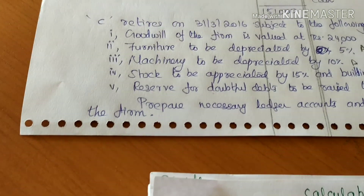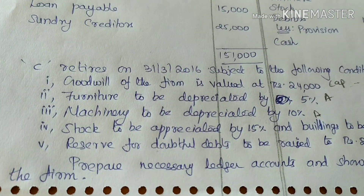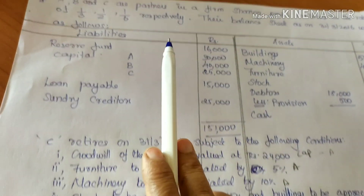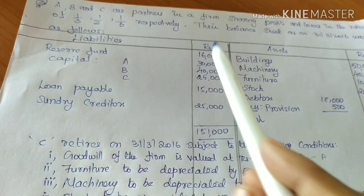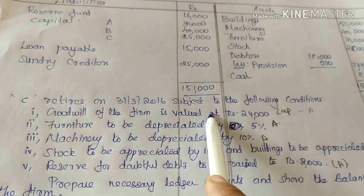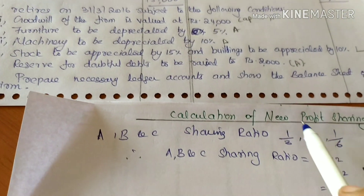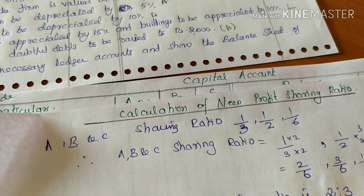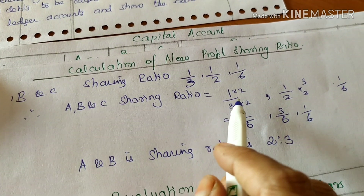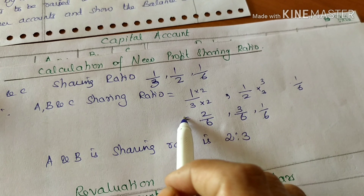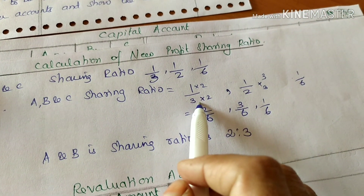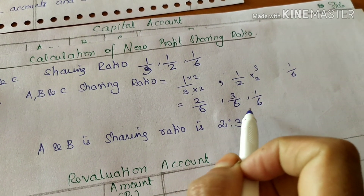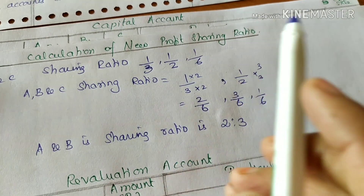Capital account to balance sheet will be covered. Now we will see what happens. Goodwill is 24,000. We need to look at the ratio. The ratios are 2/3, 2/6, 3/6, and 1/6. The old profit sharing ratio was 1/3, 1/2, and 1/6.